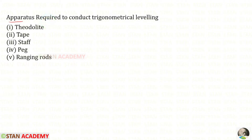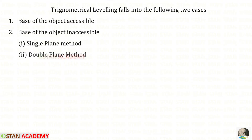The apparatus required to conduct trigonometrical leveling are theodolite, tape, staff, peg, and sometimes ranging rods. Trigonometrical leveling falls into two cases: base of the object accessible, and base of the object inaccessible. The inaccessible case has two subdivisions: single plane method and double plane method.